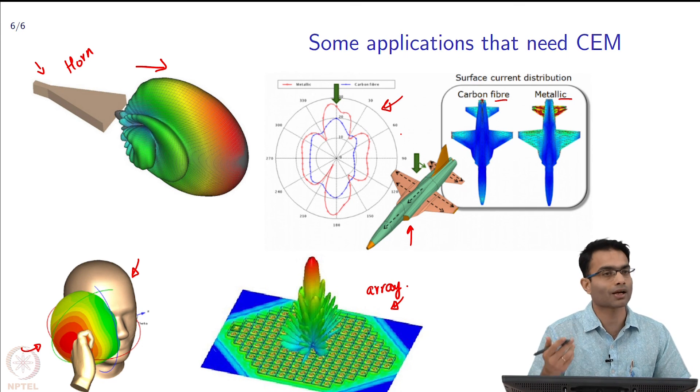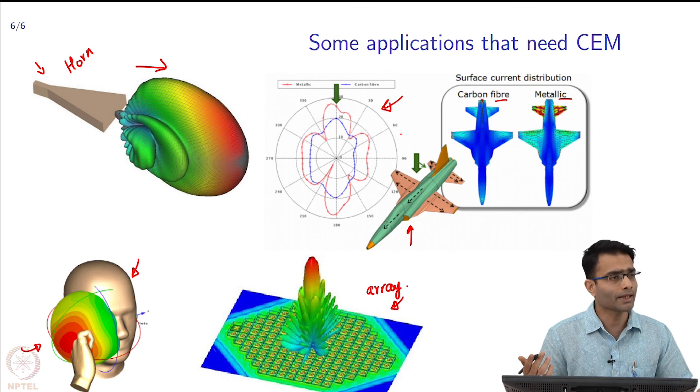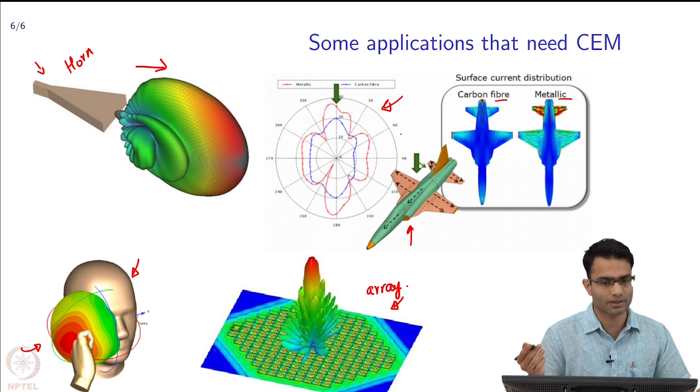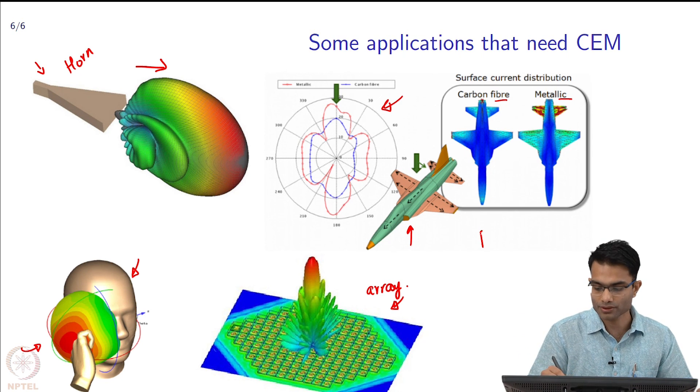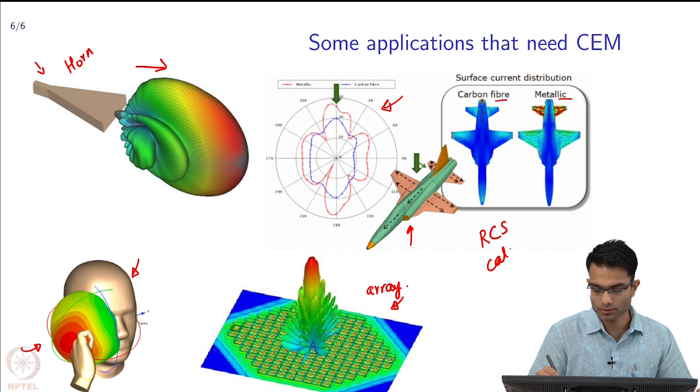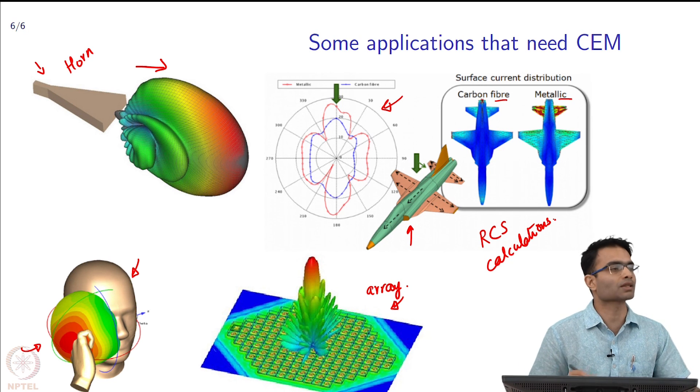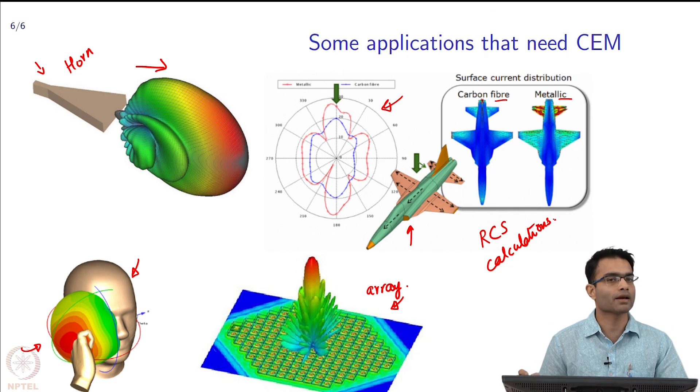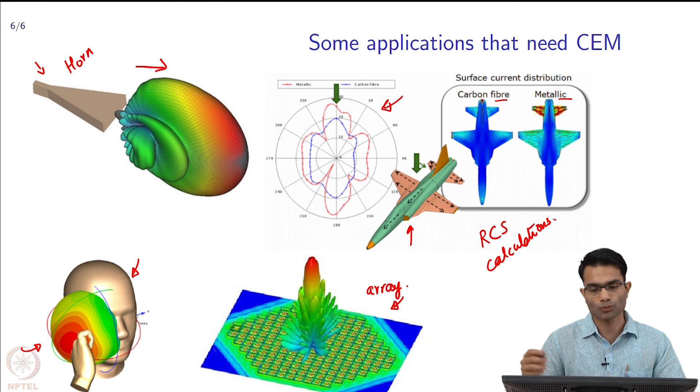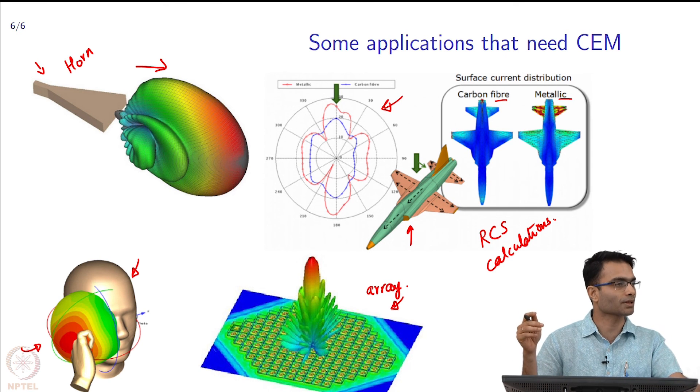This can be used for aircraft, ships, missiles - any other such applications where it is needed to know what the radar cross section is - RCS calculations. These are just some of the applications and we will look at more towards the end of the course.